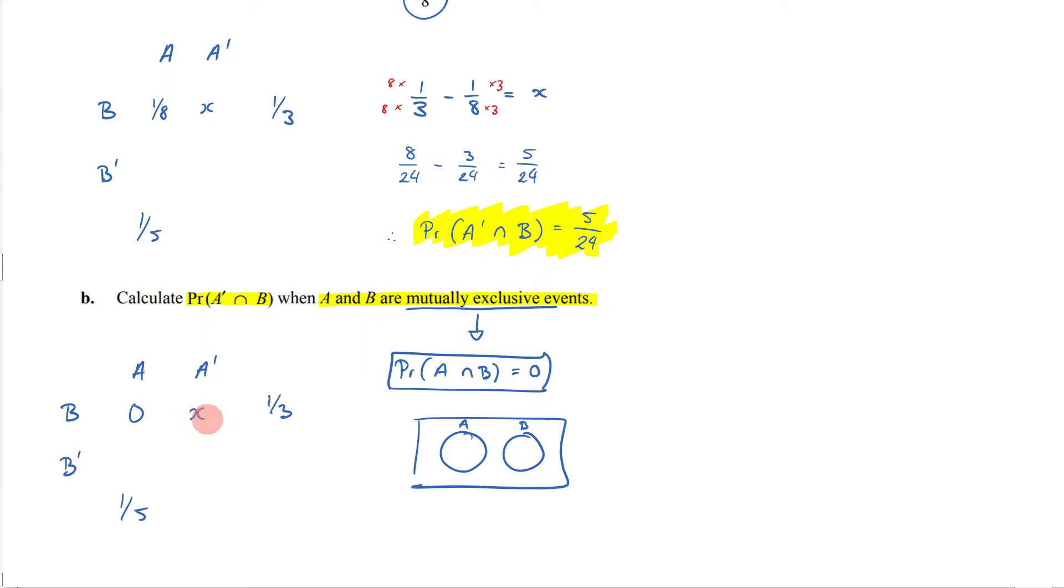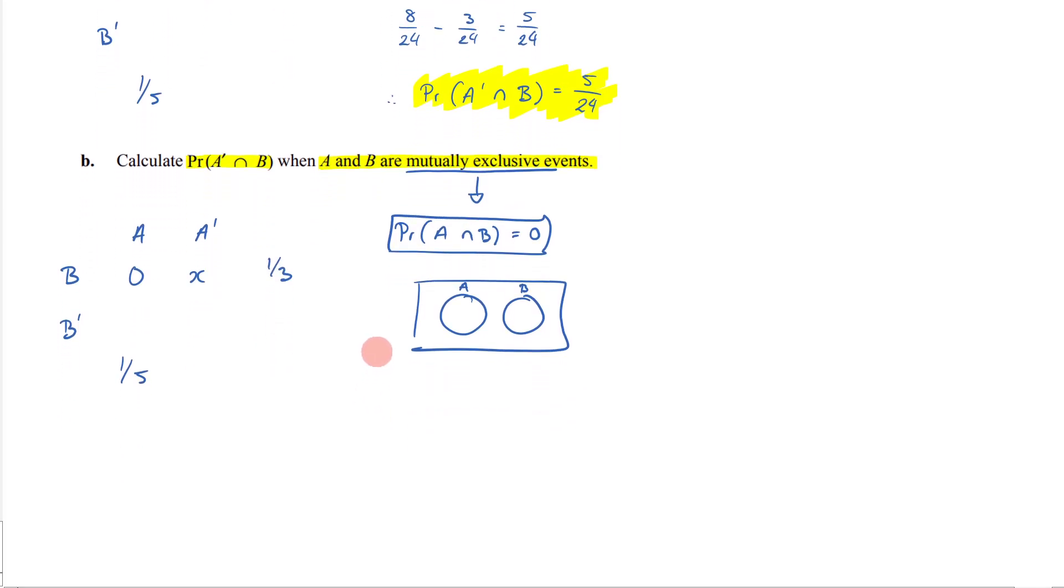So therefore, if they're asking me to find what this value here is, well, 0 plus what is 1/3? It's just going to be 1/3. So that means that the probability of A complement intersection B is going to be 1/3.